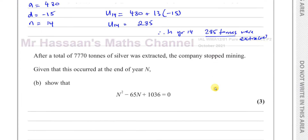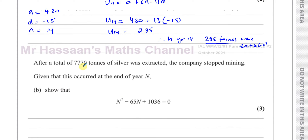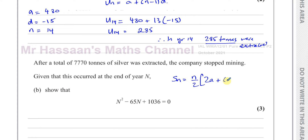Part (b) says after a total of 7770 tons of silver were extracted the company stopped mining. Given that this occurred at the end of year n, show that n² − 65n + 1036 = 0. So this is now about the total amount extracted over the years, and we use the sum formula: S_n = (n/2)(2a + (n − 1)d).